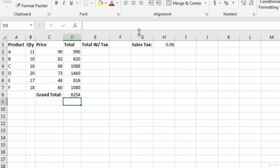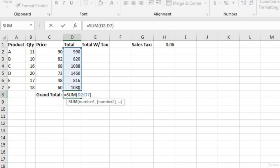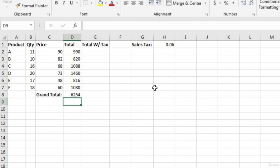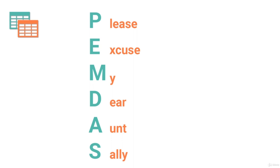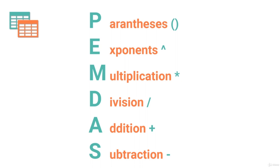Before continuing, let's go over the order of operations. Remember the acronym PEMDAS — 'Please Excuse My Dear Aunt Sally' from grade school? Microsoft Excel uses that same order of operations. Everything in parentheses gets calculated first, then exponents second, multiplication third, division fourth, addition fifth, and subtraction sixth.